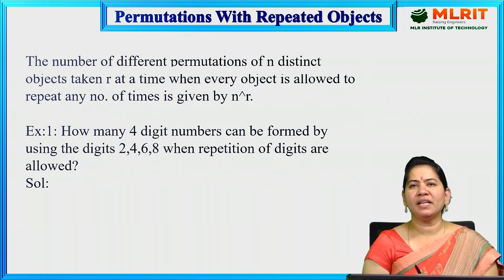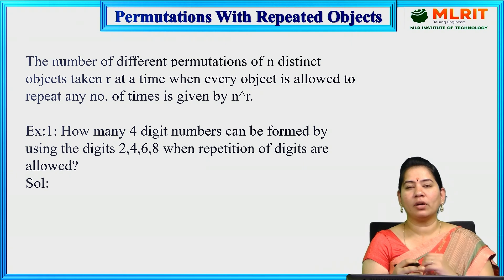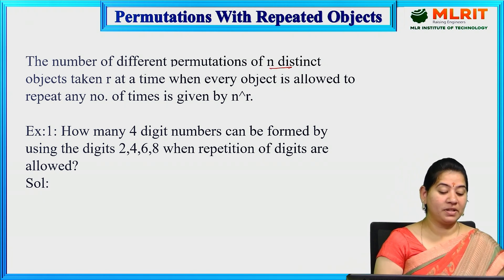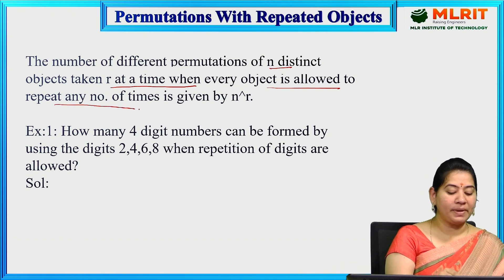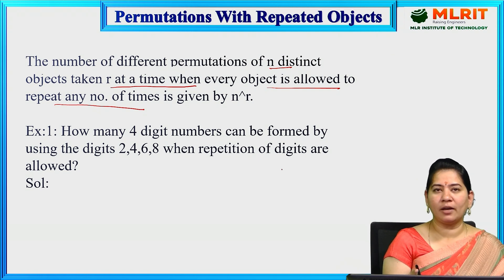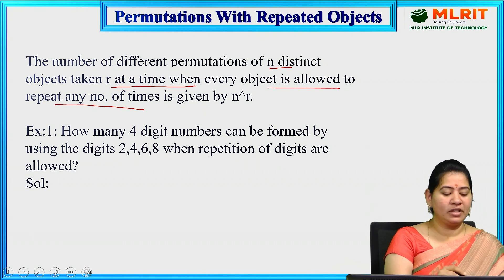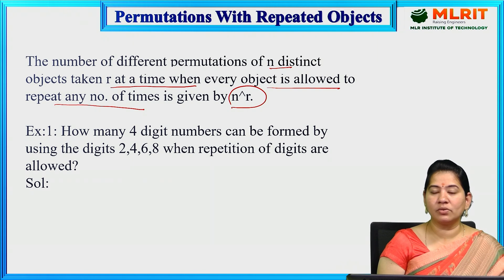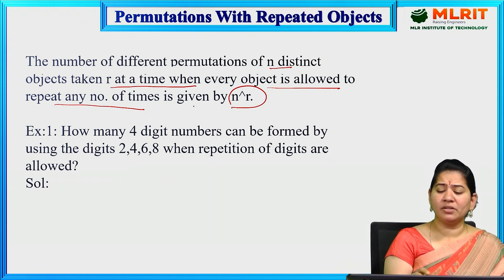The first concept is permutations with repeated objects. In the previous section we discussed permutations where repetitions are not allowed, and combinations without repetitions. Now if repetitions are allowed, the number of different permutations of n distinct objects taken r at a time, when every object is allowed to repeat any number of times, is given by the formula n power r. For all permutations and combinations we have different formulas: with repetitions, without repetitions, and for constrained repetitions.